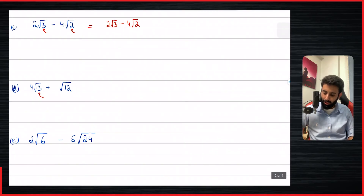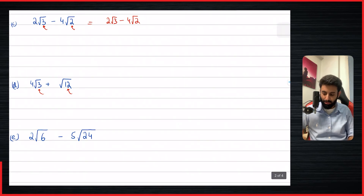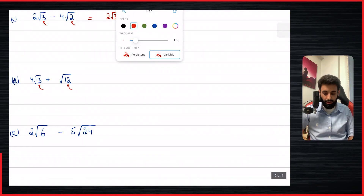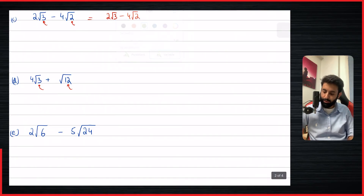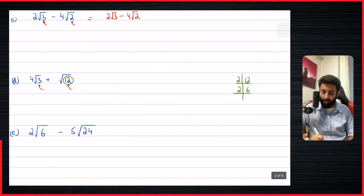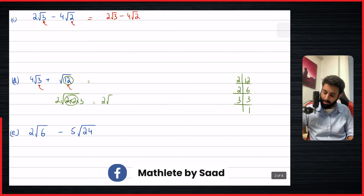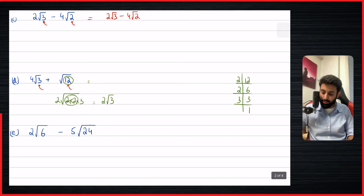Now we have four under root three plus root 12. For a second you might think this is not possible, but let me tell you it is possible. Because 12 can be simplified: dividing 12 by two gives six, divide by two again gives three, divide three by three gives one. So root 12 can be written as two times two times three — you can make a pair of two, bring it outside, and it becomes two under root three. So four under root three plus root 12 is the same as four under root three plus two under root three, and four plus two is six — so the answer is six under root three.